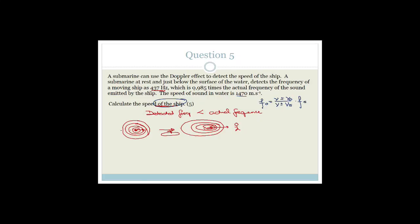The observer isn't moving — the submarine is at rest. So therefore the observer velocity term goes away. We're just left with: the frequency of the observer is equal to 1470 over 1470 ± V_s, times the frequency of the source. They say the detected frequency of the moving ship is 0.985 times the actual frequency of the sound.